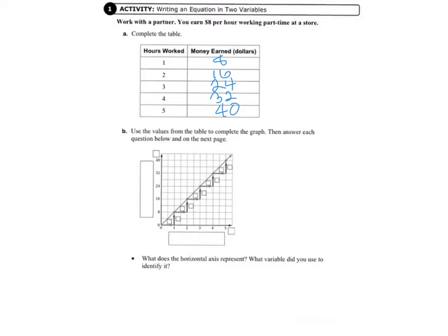So let's first write our graph values as ordered pairs. So we're going to write 1, 8, and 2, 16, 3, 24, 4, 32, and 5, 40.